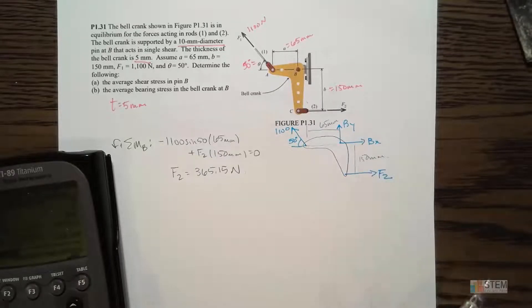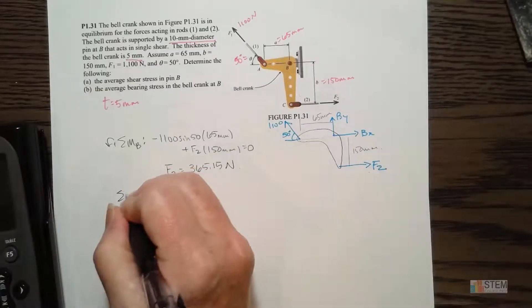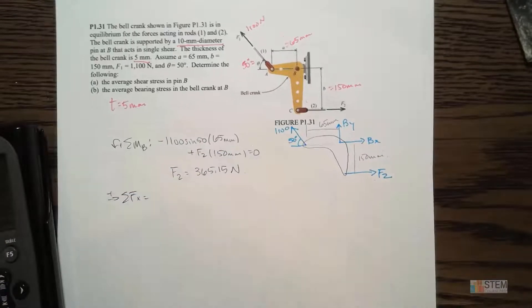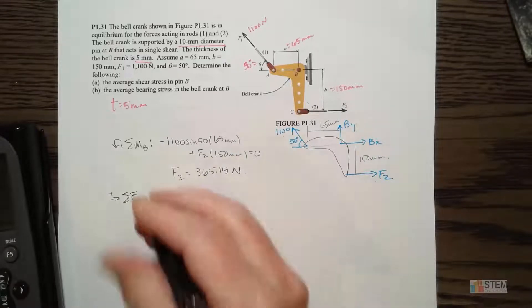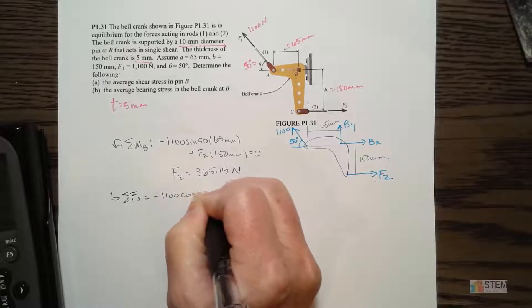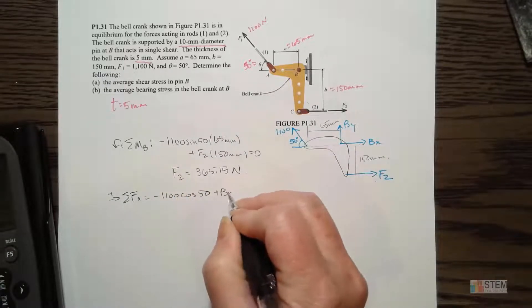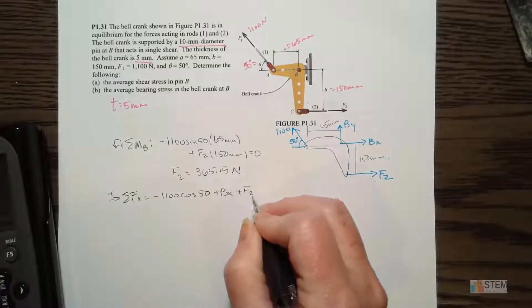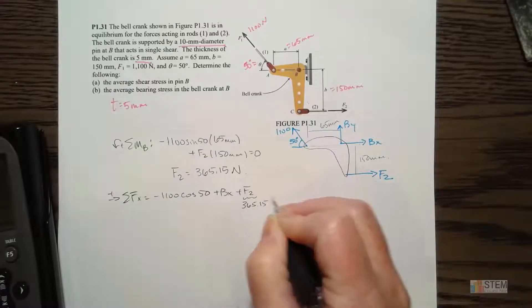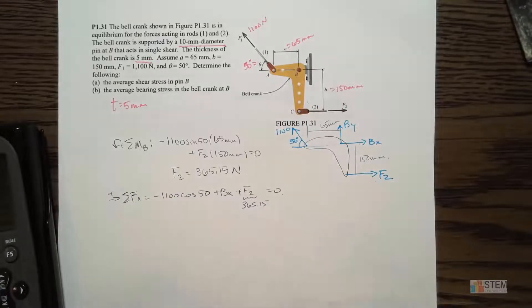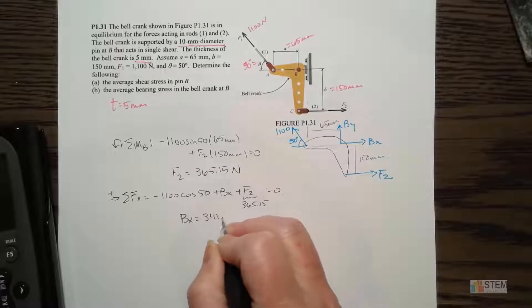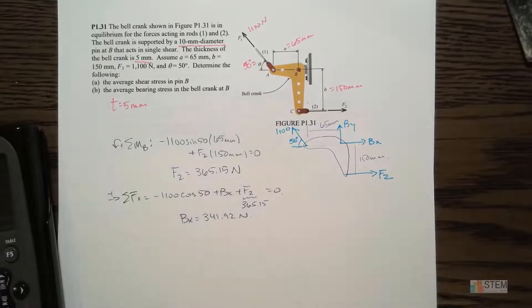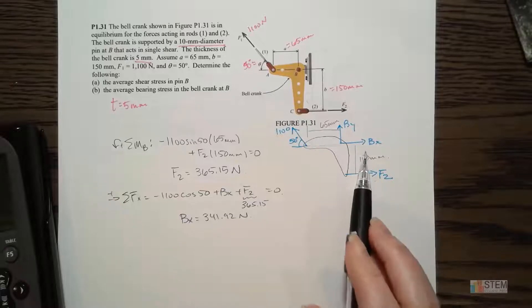Now we can go ahead and find BX, BY. I'll do the X equation first. So this one has an X equation. It's going to be negative, though, because it's pointing left. So we're going to have negative 1100 cosine 50 plus BX plus F2. We already know what F2 is, so let's plug in that value. Set it to zero. BX is our unknown. So this one is going to give us a positive 341.92, and that's Newtons. So positive means that was the correct direction.